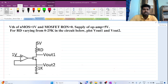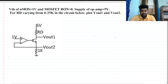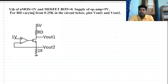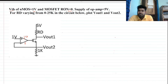Welcome everyone to this session. Let's solve a very interesting interview question. We have a MOSFET and an ideal op-amp, two resistors, and the threshold voltage of this NMOS is 1 volt. The on-resistance of this MOSFET is zero ohms, and the op-amp supply is 5 volts to zero volts.